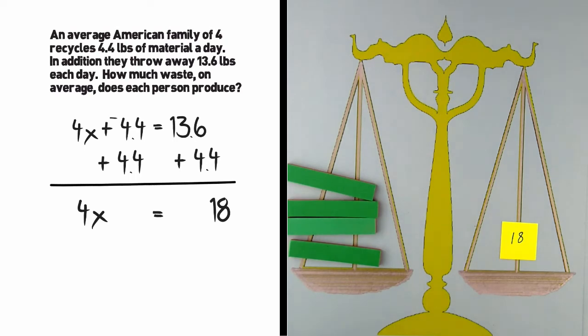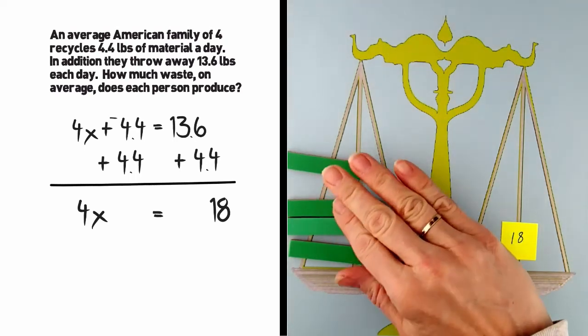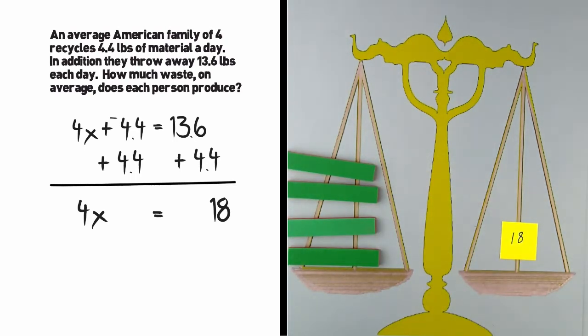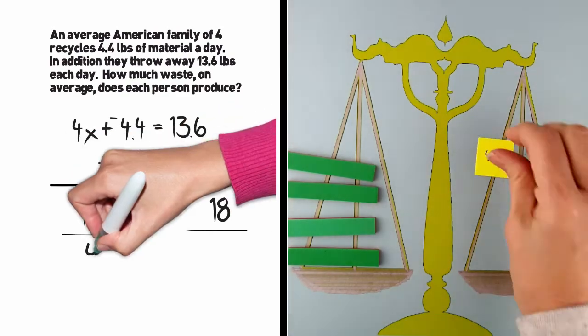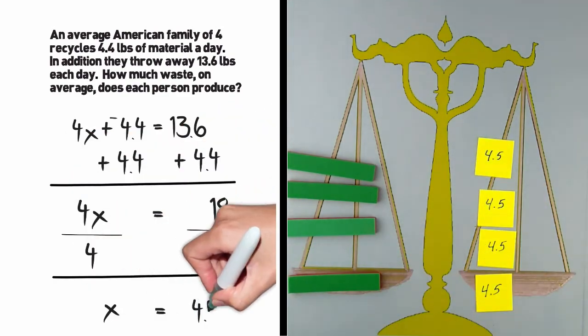The next step, of course, would be to find out how much 1x would be. So we need to break the 18 into 4 equal pieces by dividing by 4, giving us 4.5. So the average person produces 4.5 pounds of waste each day.